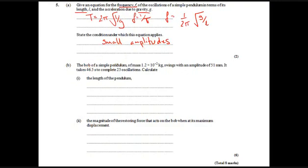The next part requires extracting the right data. We have a mass — which might surprise you, since the period doesn't depend on mass — and an amplitude — which might also surprise you, since the period doesn't depend on amplitude under this approximation. The key data is that it takes 46.5 seconds to complete 25 oscillations. We need to calculate the length of the pendulum.